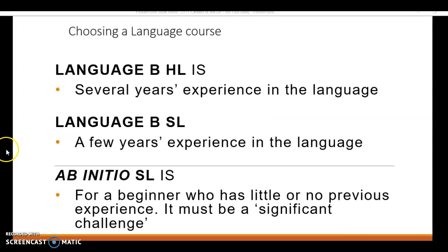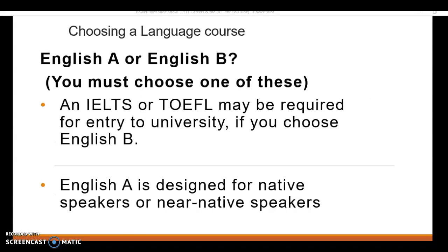Language B at higher level would be for somebody who's had several years' experience in that language and can hold a detailed conversation at a pre-intermediate or intermediate level. Standard level language B requires several years' experience and the ability to hold a regular conversation about familiar subjects. Ab initio in group two means 'initial' - this is for somebody who hasn't studied that language before or has very little experience. At AIS, you have to choose either English A or English B. If you choose English B, you may need to also do an IELTS or TOEFL type test for university entry.